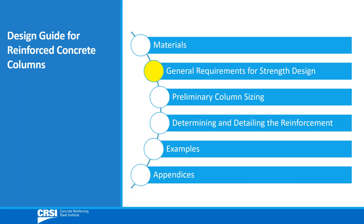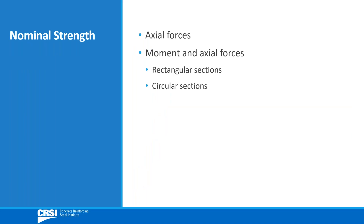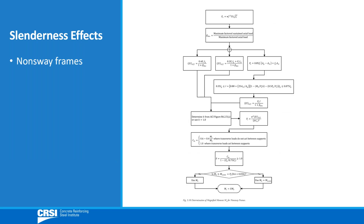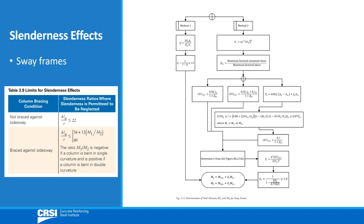Provided in Chapter 3 are the general requirements for strength design. Included is nominal design strength information for rectangular and circular sections subjected to axial forces or combined moments and axial forces. Flow charts, like the one shown here for circular sections, are provided that contain step-by-step procedures on how to construct design strength interaction diagrams. The effects of slenderness are also covered, and design aids and flow charts are given that can be used to determine magnified bending moments for both non-sway and sway frames.